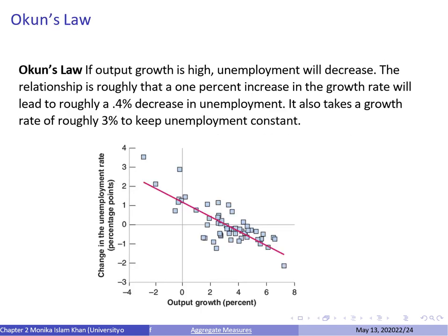The graph shows the relationship between output growth and the unemployment rate. It is downward sloping, meaning they have a negative relationship — if output growth is high, unemployment decreases. This makes intuitive sense: high output growth means firms are hiring more workers and producing more output, so unemployment falls. This relationship was first examined by US economist Arthur Okun, and has become known as Okun's law.